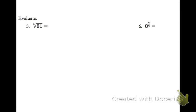Now we're going to evaluate. Anytime it says evaluate, you want to get it down to one number. First, evaluate the fourth root of 81. We're asking: what to the fourth power equals 81? You can guess and check — 1 to the fourth is 1, 2 to the fourth is 64, 3 to the fourth is 81. So your answer is 3.